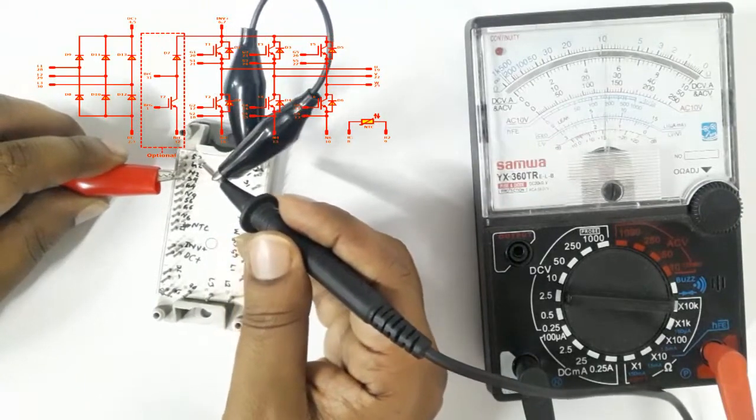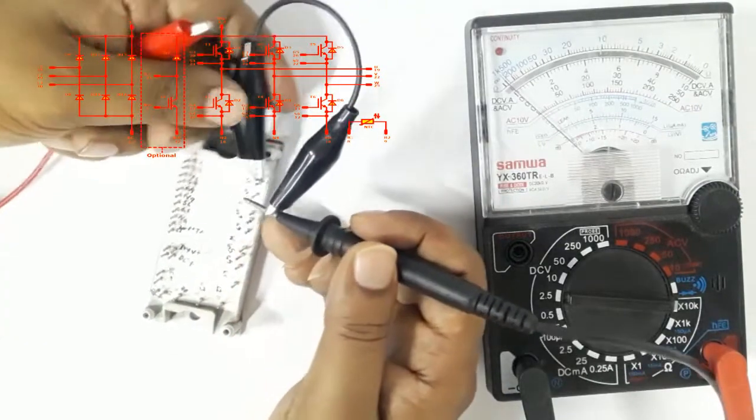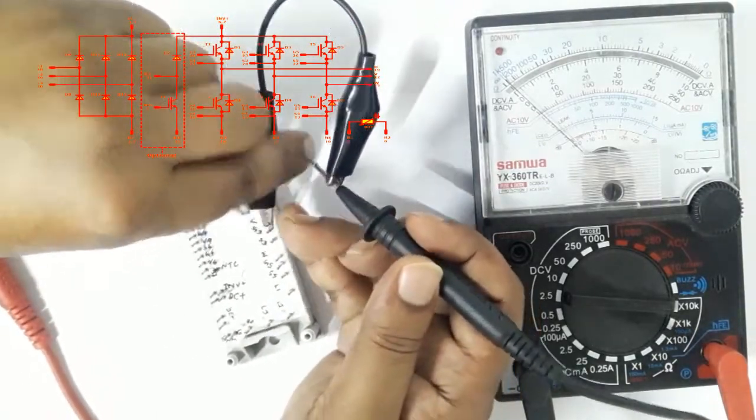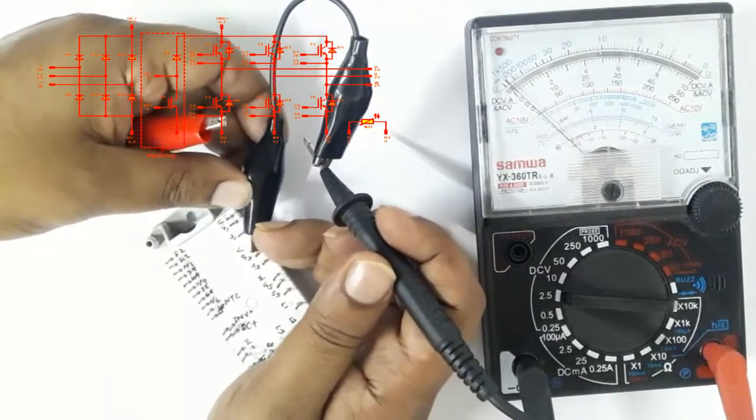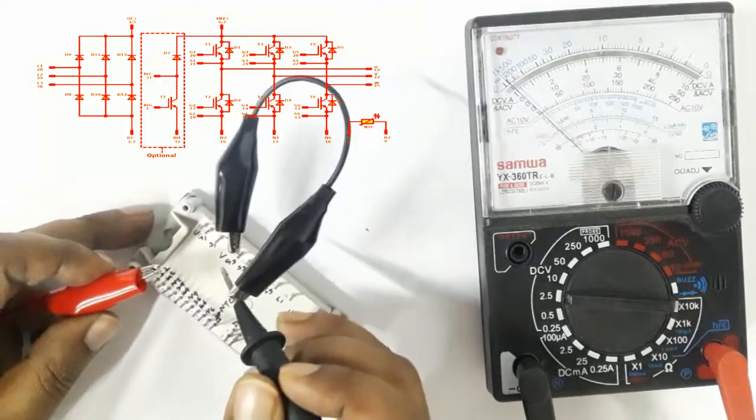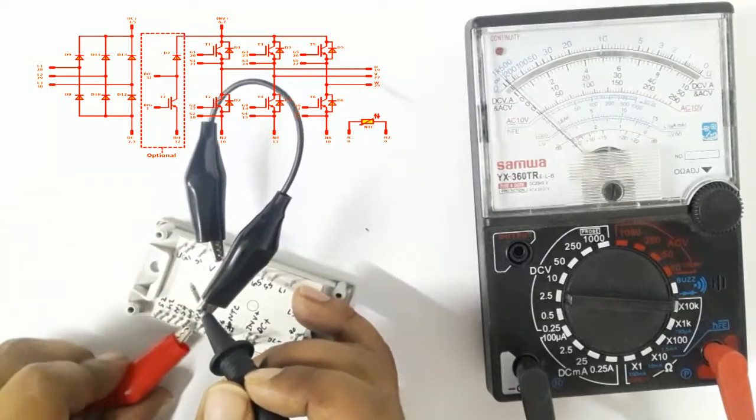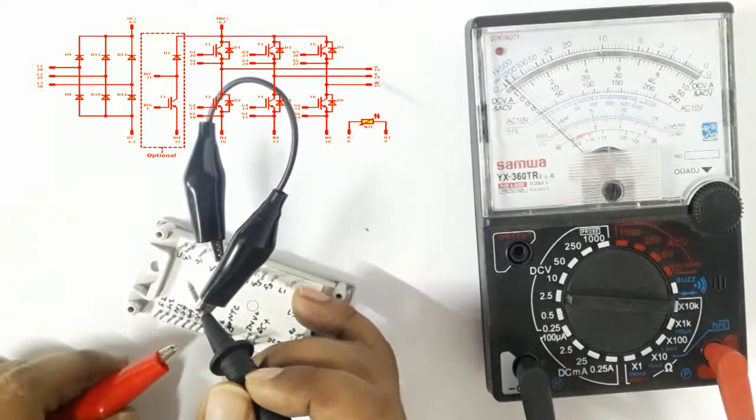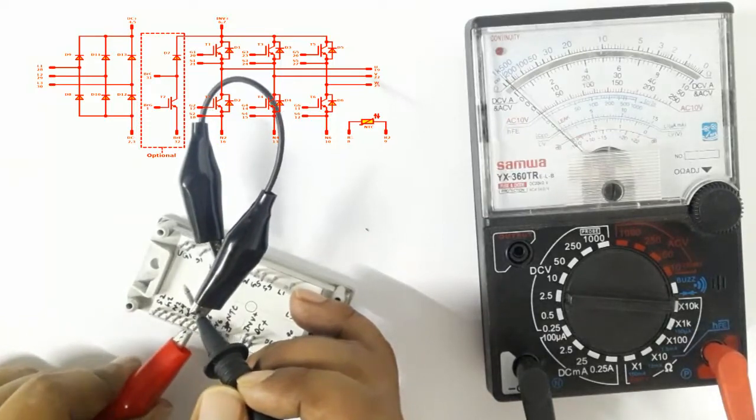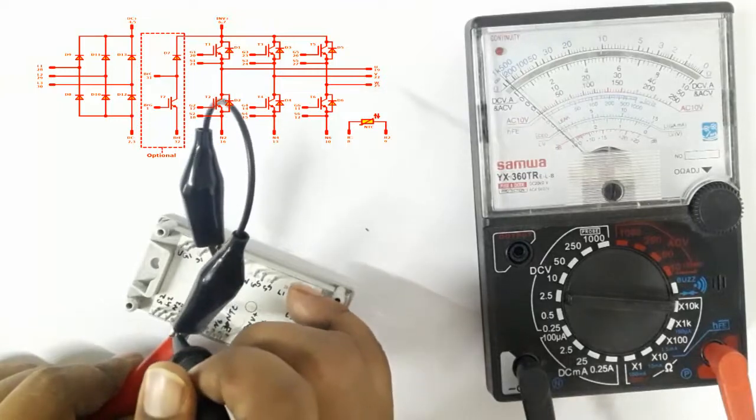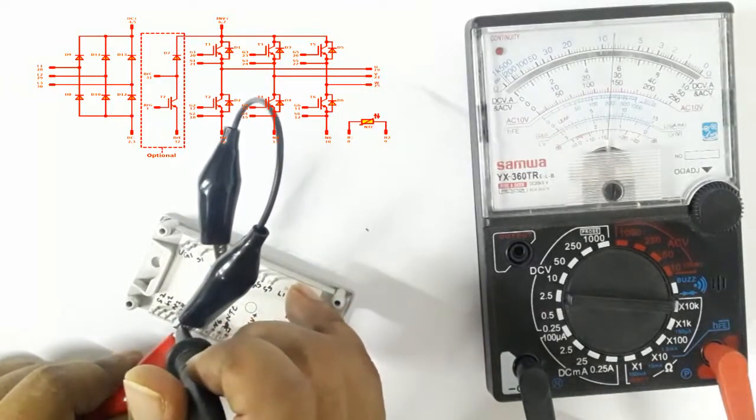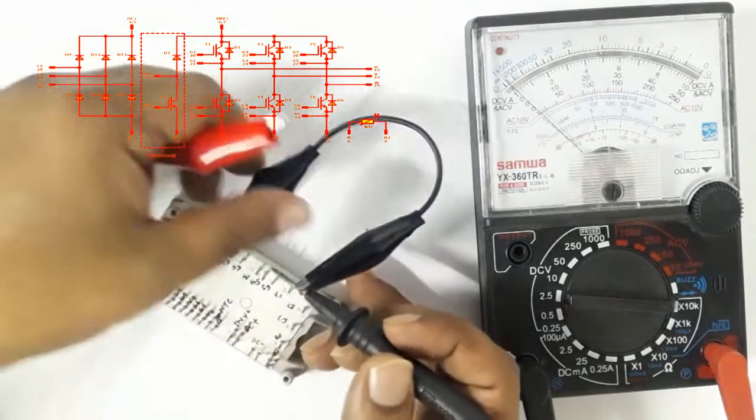It's working. Now testing terminal B (V) against gate 4. This one is also working.